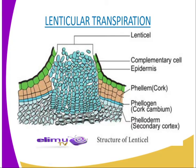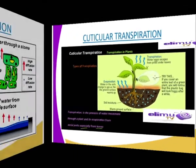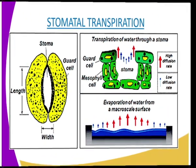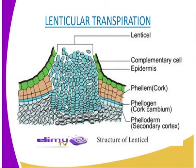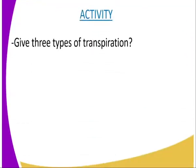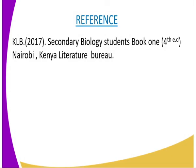So those are the three types of transpiration: the first is stomatal transpiration, the second is cuticular transpiration, and the third is lenticular transpiration. Remember, the main form of transpiration is through the stomata, which is stomatal transpiration. For this lesson's activity, you are required to give three types of transpiration. For more reference, you can refer to Secondary Biology Students Book 1, Kenya Literature Bureau.